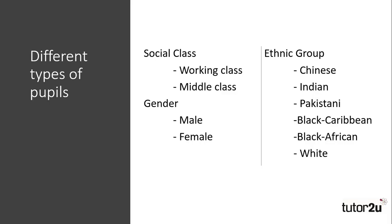First of all, we need to consider the different types of pupils that we might study. Although the question doesn't usually specify who is being studied, over the course of the specification you will have noticed that pupils will have different characteristics based upon their social class, their gender or their ethnicity. For example, working class students may be seen as more anti-school than middle class students. They may be more fatalistic, more dismissive of authority figures, and this is something that researchers would have to take into account.